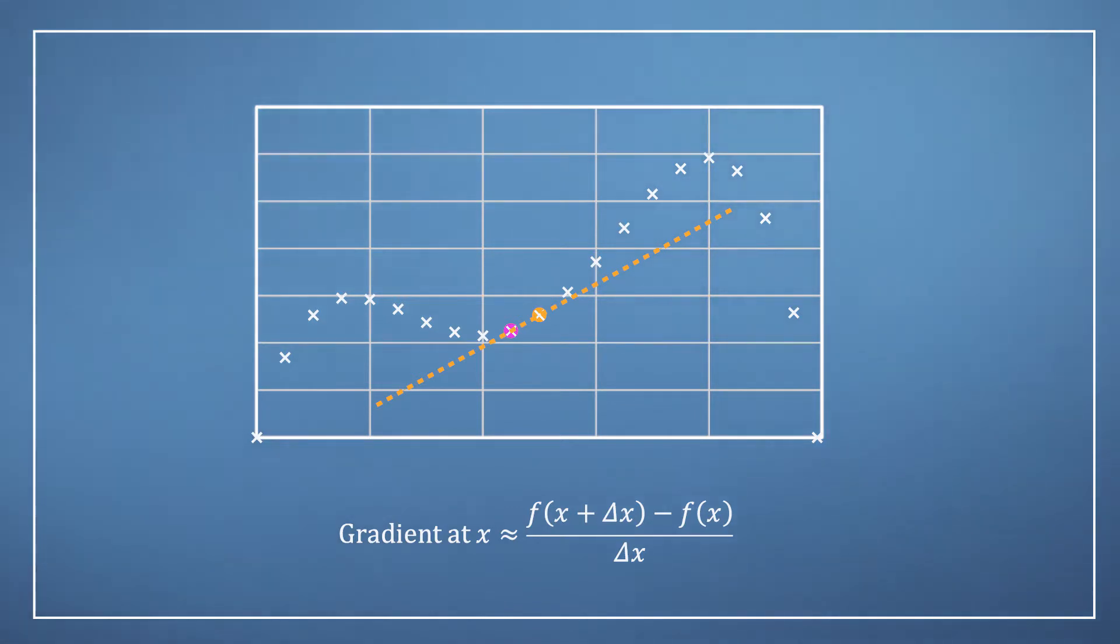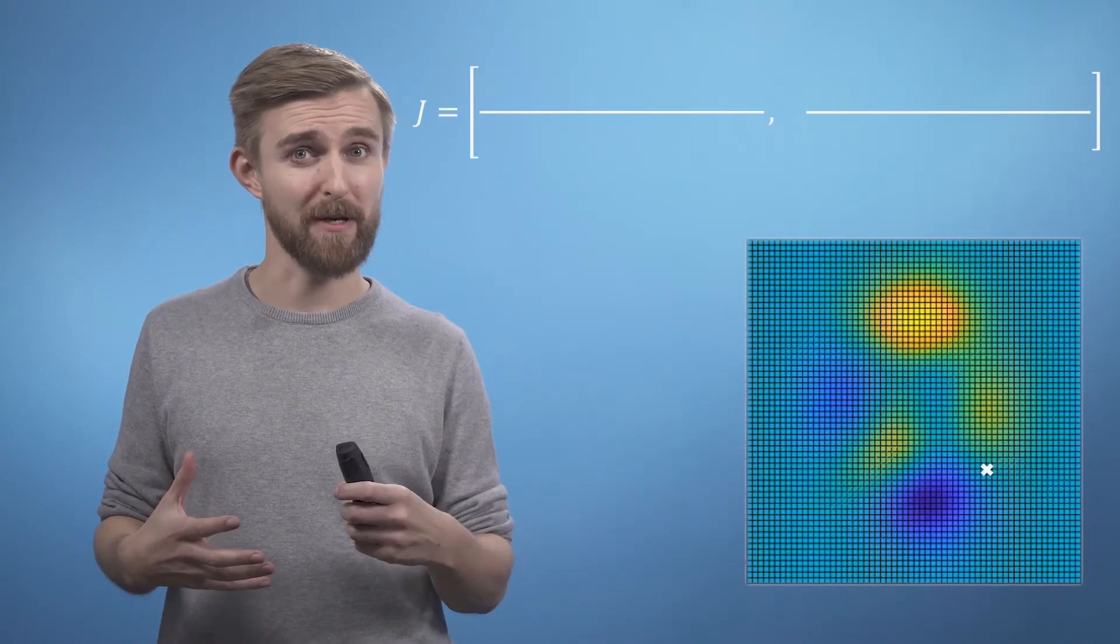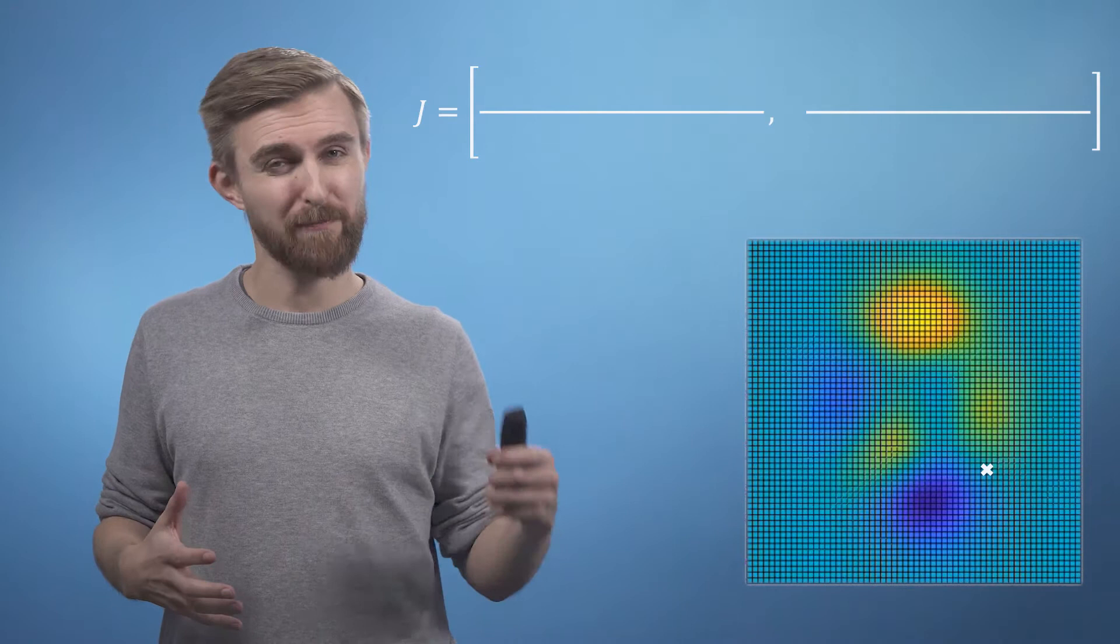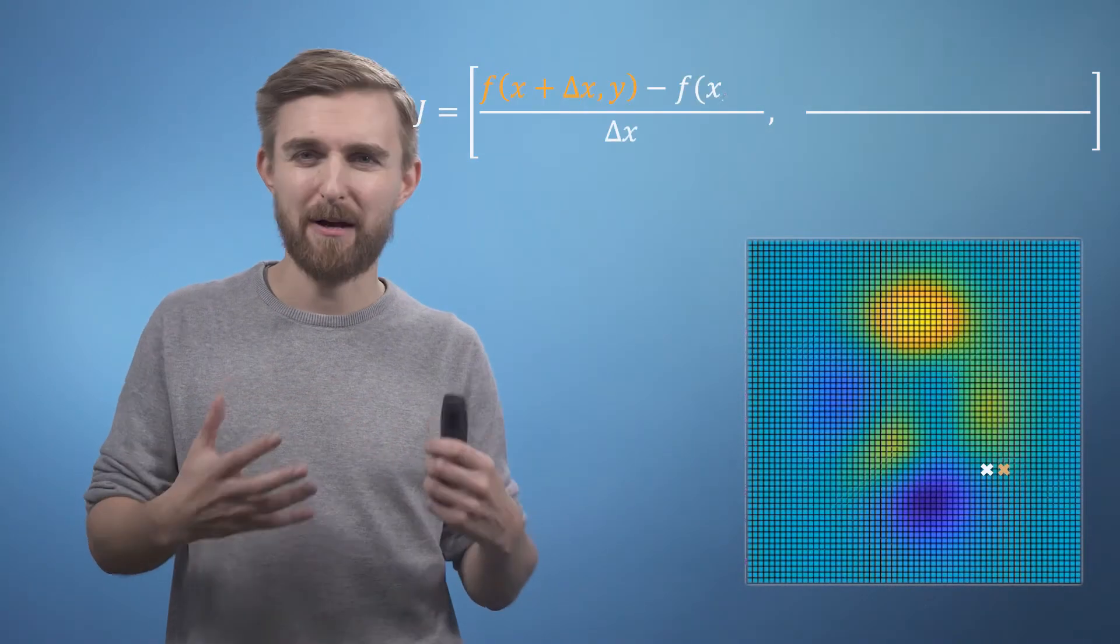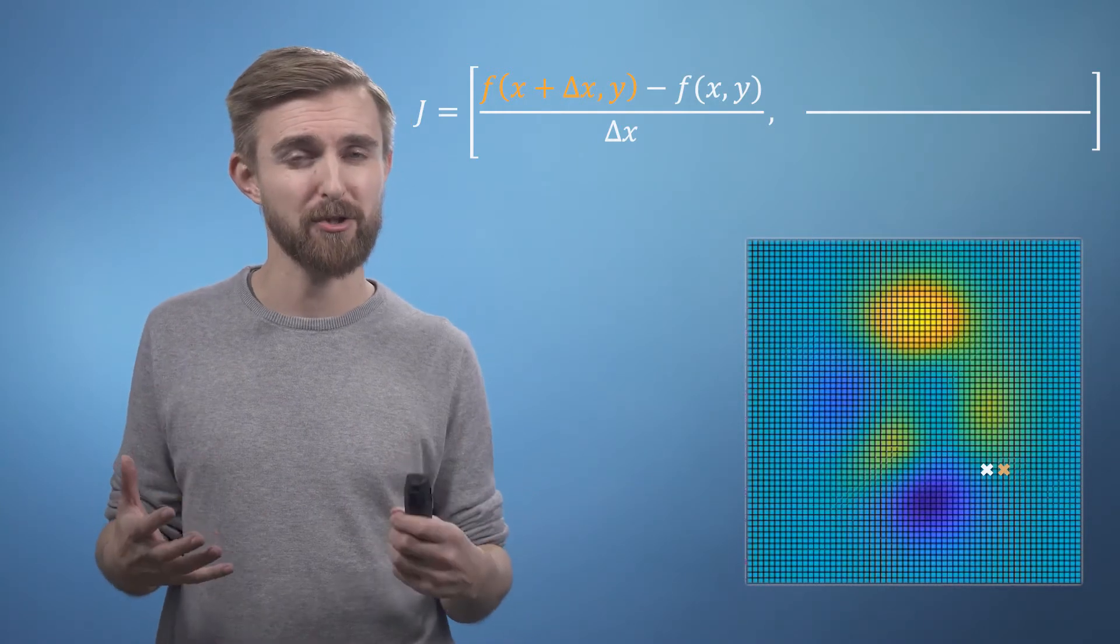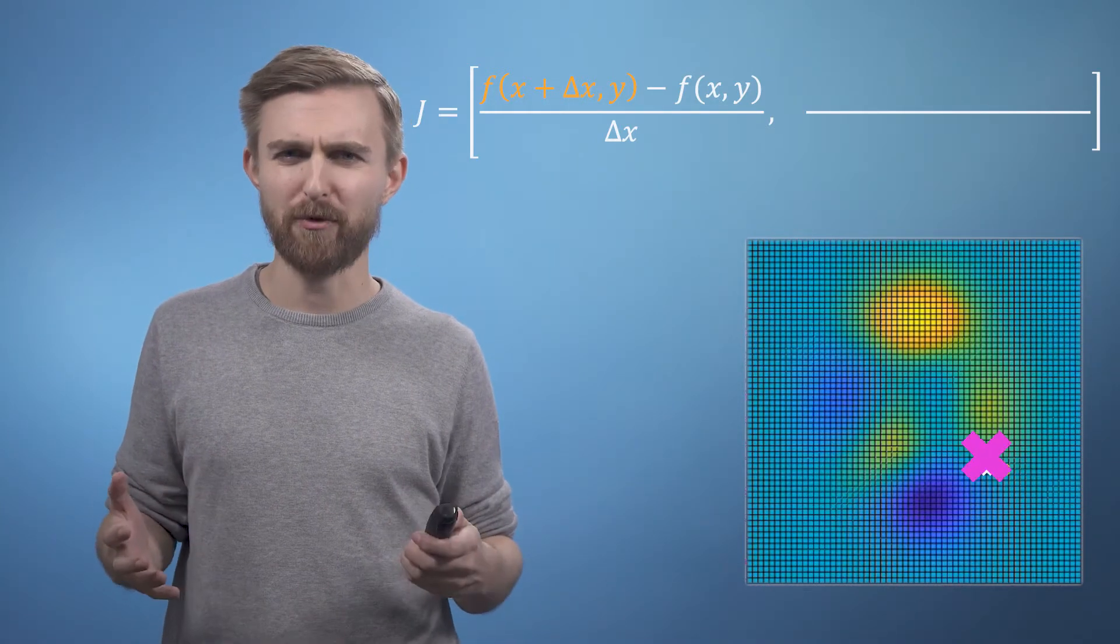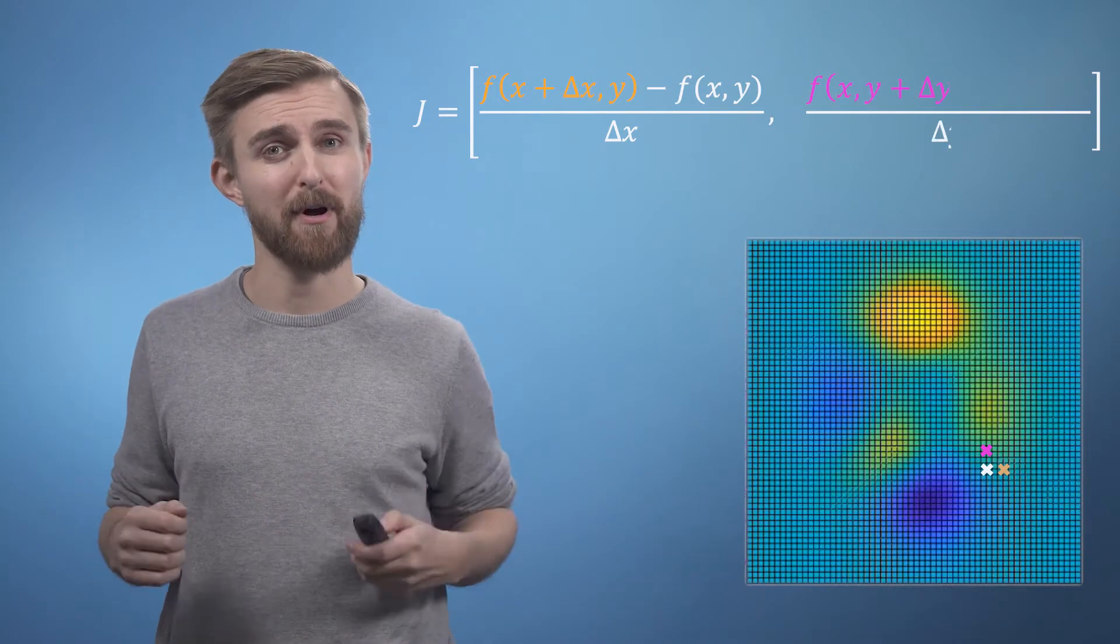So all we do is take this logic one step further and say if we start from an initial location and we would like to approximate the Jacobian, we will simply approximate each partial derivative in turn. So taking a small step in X allows us to calculate an approximate partial derivative in X, and a small step in Y gives our approximate partial in Y.